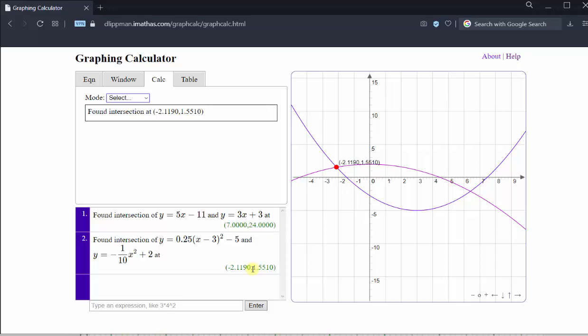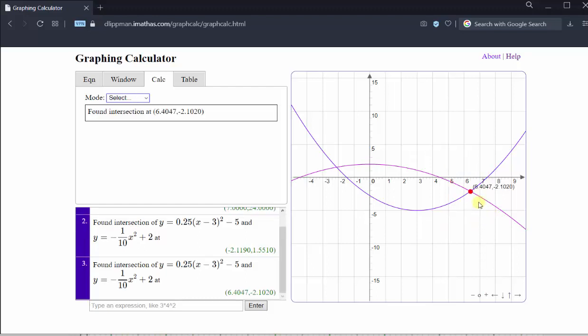Note the decimal approximation. Let's do the same for the second point of intersection. Click the dropdown menu, click Intersection. Draw a box around the second point of intersection. Release the mouse. And now we have the second point of intersection. Notice how both are recorded here in the lower left-hand corner in the calculation window.